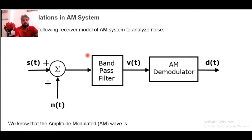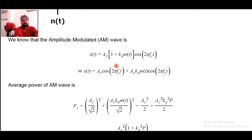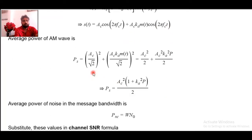Let's discuss how SNR can be calculated within an amplitude modulated system. s(t) is the modulated signal with some noise being inserted. A band-pass filter is used so that the signal comes out and the AM demodulator gives the value of d(t). The carrier frequency is fixed, and noise at different frequencies is segregated out while the signal is extracted. The modulated signal s(t) is expressed as: Ac[1 + ka·m(t)]cos(2πft). This is the AM amplitude modulated wave equation, and we expand this to find out the power.